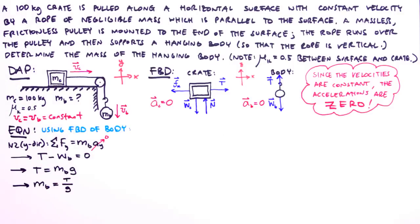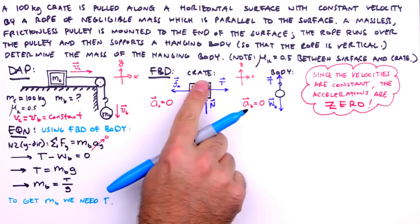Now, tension is not a known quantity, so to get the mass of the body, we need a value or expression for t. Since we've learned all we can from the hanging body, we now turn our attention to the crate.